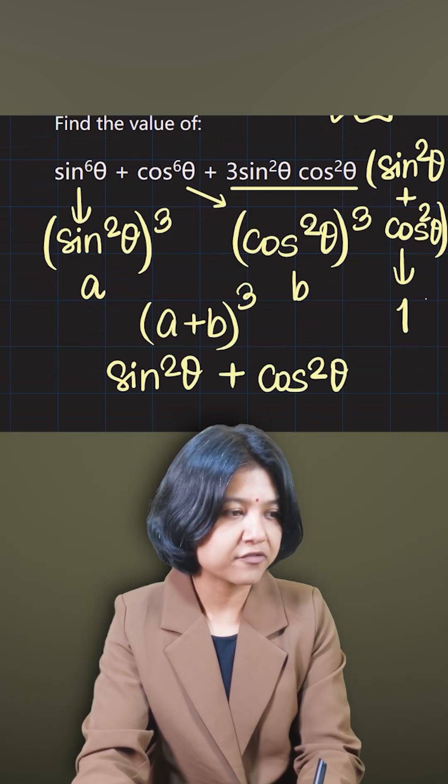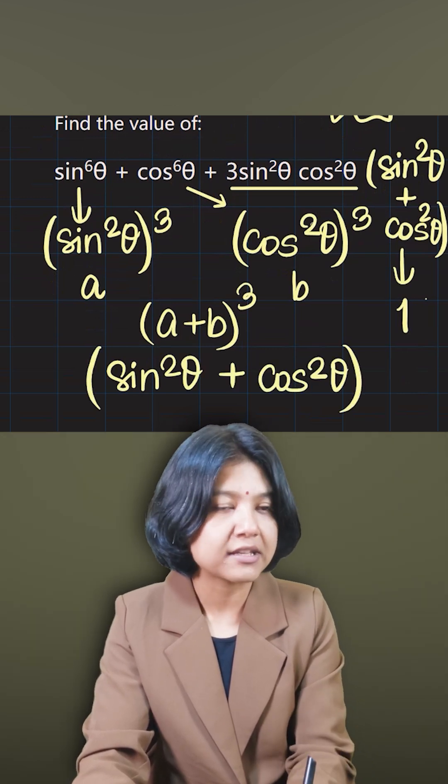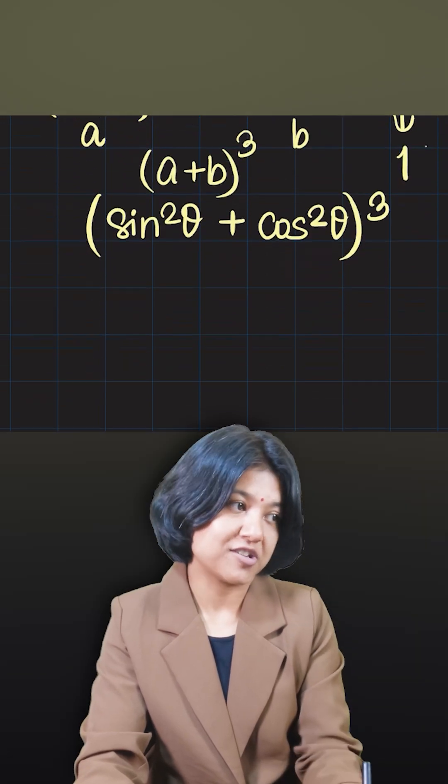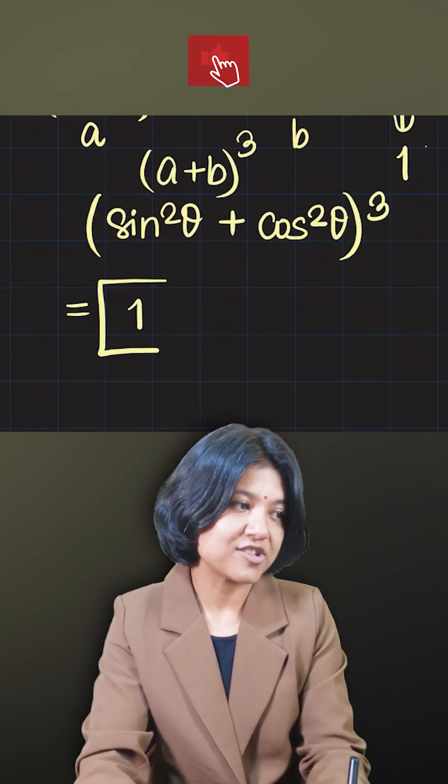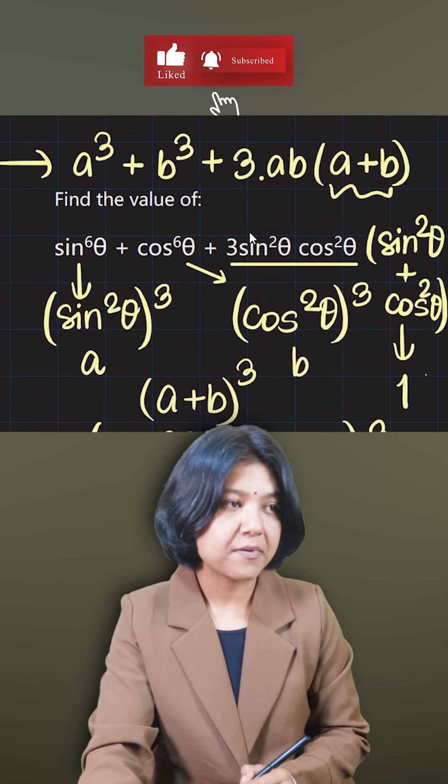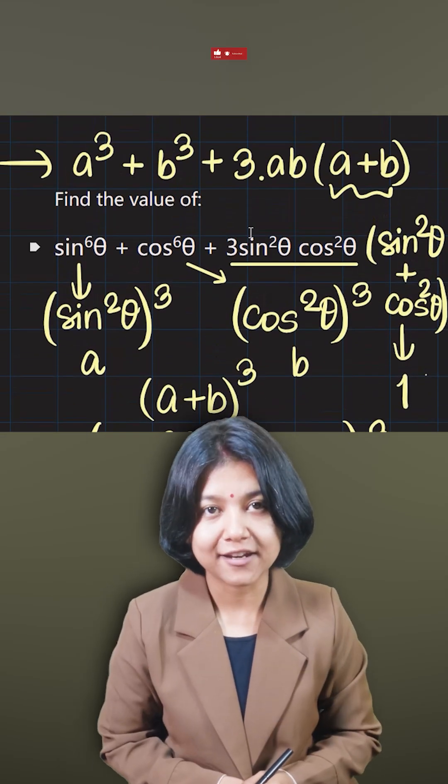And now, interestingly, you know the value for sine squared theta plus cos squared theta, which is 1. So 1 cube is just 1. And hence, the final answer is just 1. That's it. It looked so complex initially, but this is how you can get it.